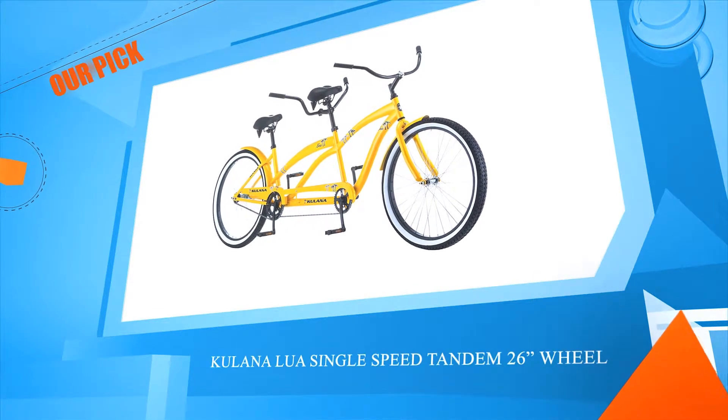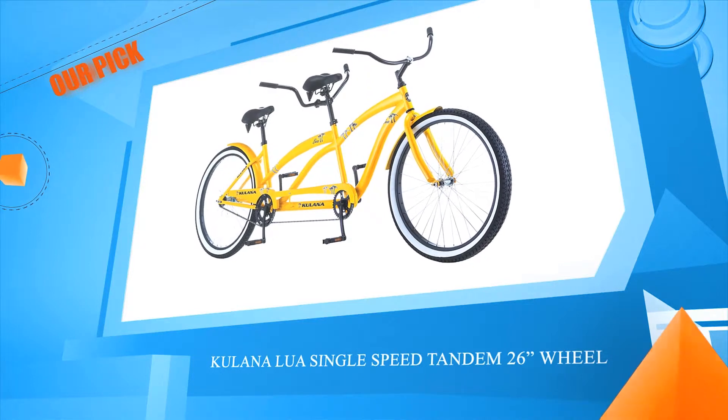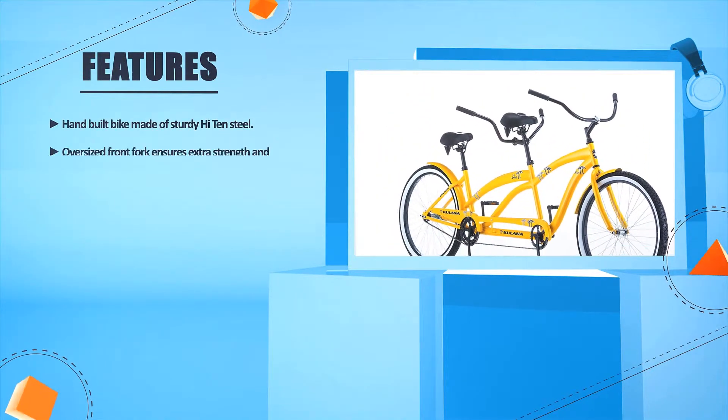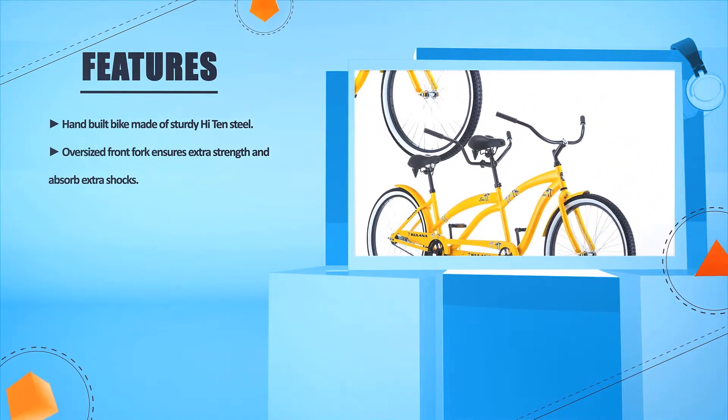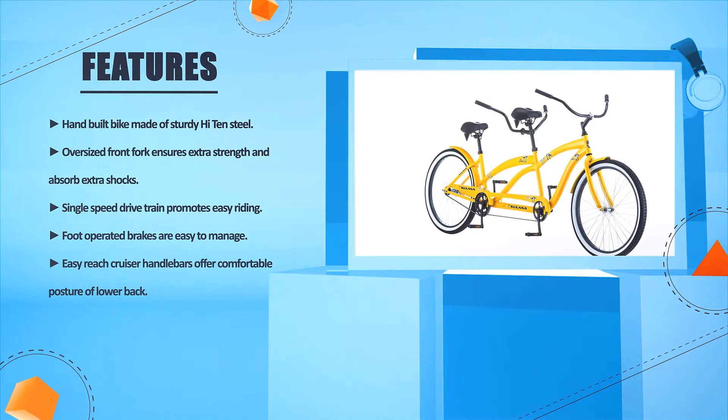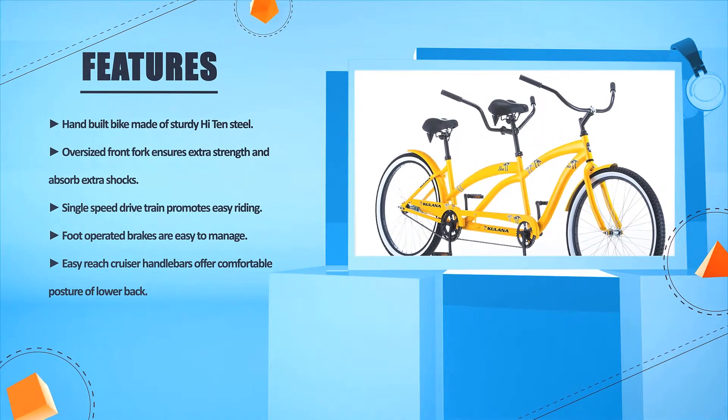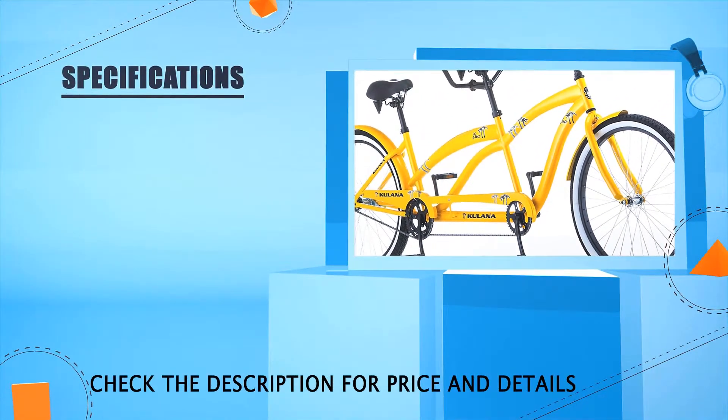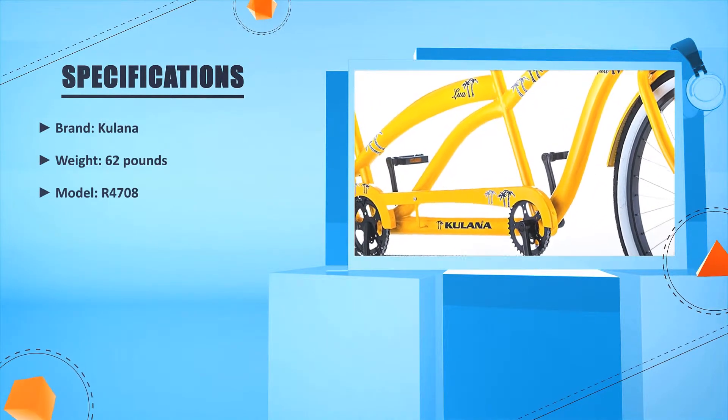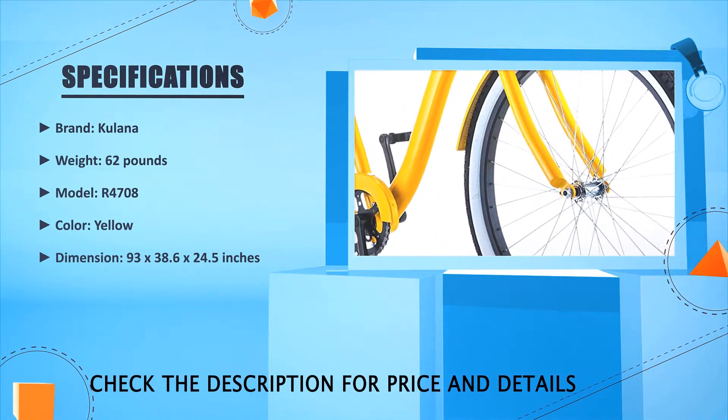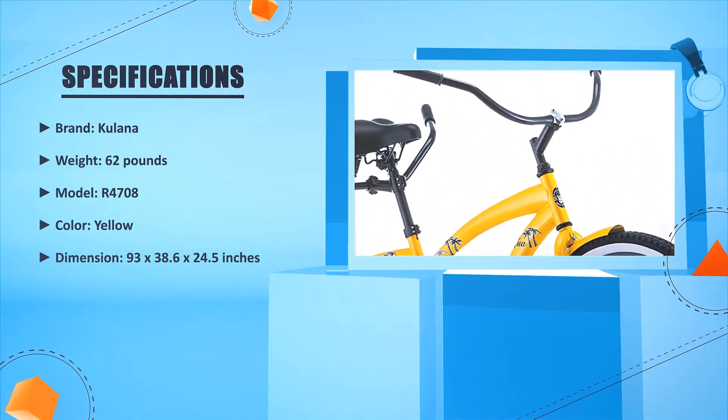Number three: Kalanalu Single Speed Tandem 26 inches wheel. Hand-built bike made of sturdy heightened steel. Oversized front fork ensures extra strength and absorbs extra shocks. Single speed drivetrain promotes easy riding. Foot-operated brakes are easy to manage. Easy reach cruiser handlebars offer comfortable posture for lower back. Brand: Kalanalu, Weight: 62 pounds, Model: R4708, Color: Yellow, Dimension: 93 x 38.6 x 24.5 inches, Brand new.